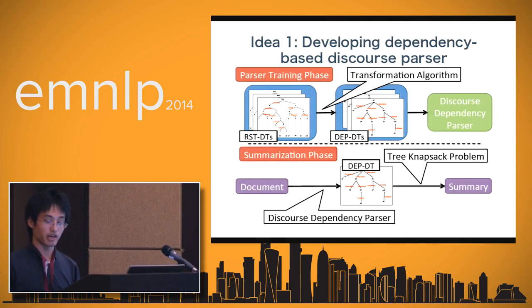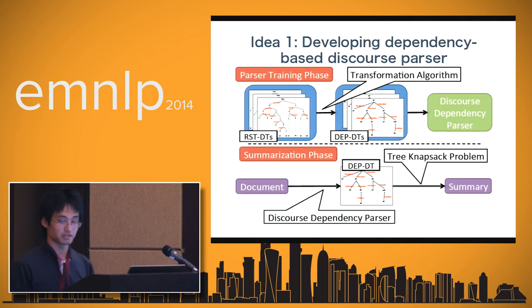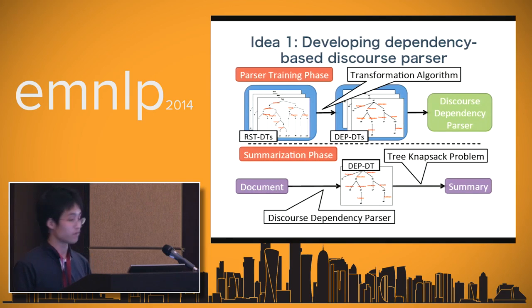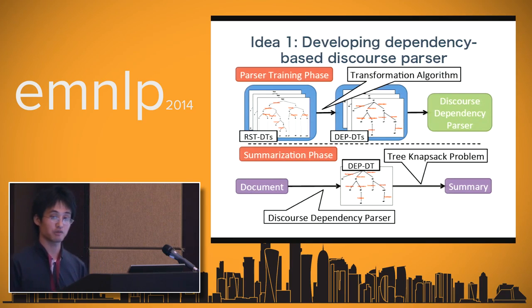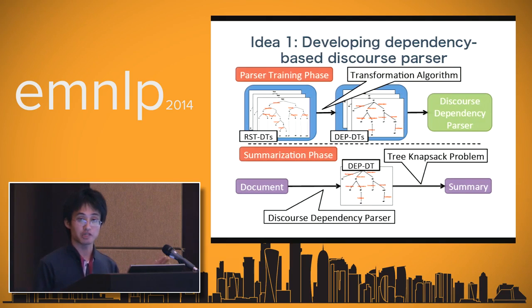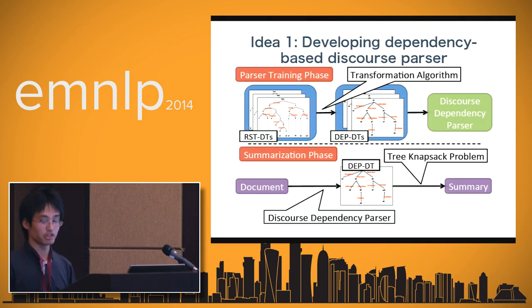The first idea is developing a discourse parser that directly generates DEP-DTs. This method also has two phases. In the parser training phase, we transform RST-DTs into DEP-DTs and train a dependency-based discourse parser using Mira as the learning algorithm. In the summarization phase, the input document is parsed directly into a DEP-DT using the maximum spanning tree algorithm for decoding. After obtaining the DEP-DT, we get the summary by solving the tree-knapsack problem. Note that our proposed method does not include the RST parser — we directly output the DEP-DT.